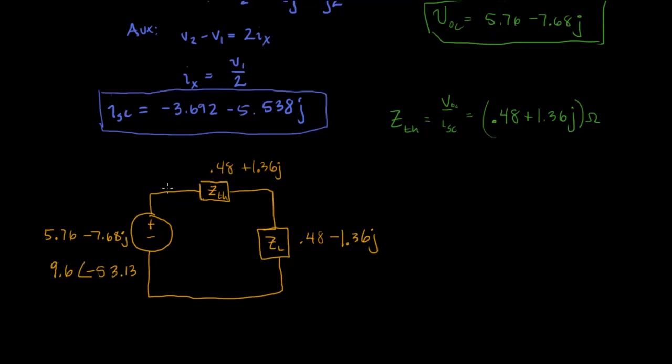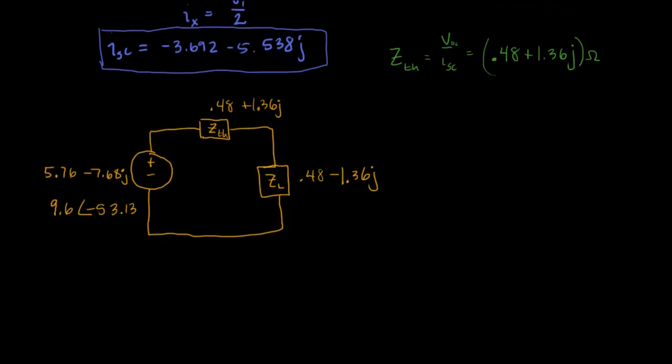And now we're supposed to find the actual power that is transferred. So what we've done is we've set up a Thevenin equivalent circuit. And we found the impedance that we could place into this circuit to have maximum power transfer occur. Now we want to figure out, well, how much power actually is transferred. And to do that, let's solve for the current in this network. The current, of course, will be V over Z.